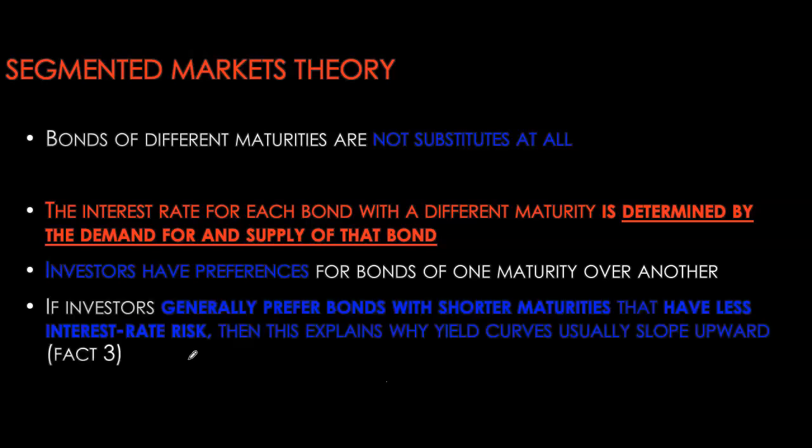Independently, the segmented market theory explains one fact — why yield curves are usually upward-sloping — while the expectations hypothesis explains the other two facts. So far we have not come across an economic model that explains all three facts about the term structure of interest rates together.